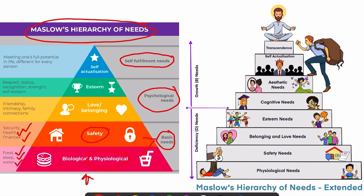If the layers below are ensured, then people start climbing up the pyramid and focus on the needs above. If these basic needs are ensured, they move on to the love and belonging needs, where their focus will be on friendship, intimacy, family, connections, trust, affection, etc.